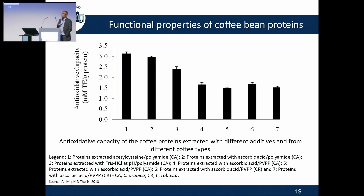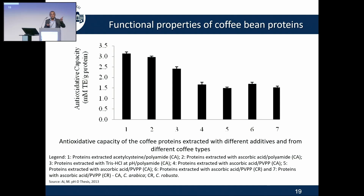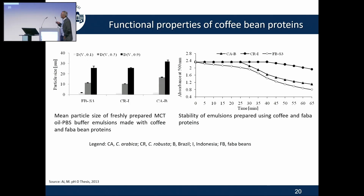Depending on the different method used to extract the proteins, we could get different antioxidative capacity, because they have bound the chlorogenic acid, and the bound chlorogenic acid is still available for further interactions. Think about ibuprofen and lysine-ibuprofen — why do we take lysine ibuprofen? We are making it easier for chlorogenic acid to come into the body and cause different reactions. We found that we could make good emulsions with the same quality as fava beans, which are very effective in giving good stability.